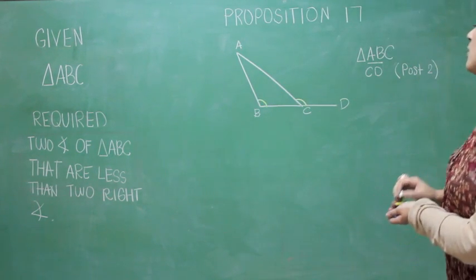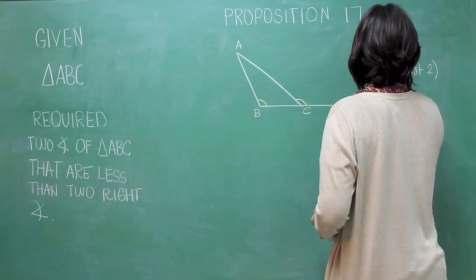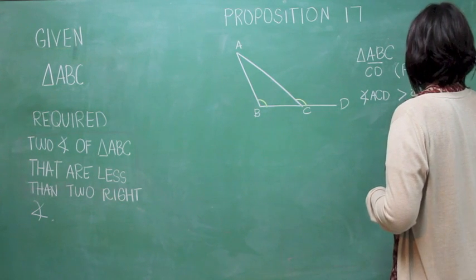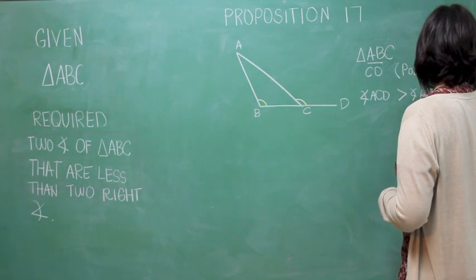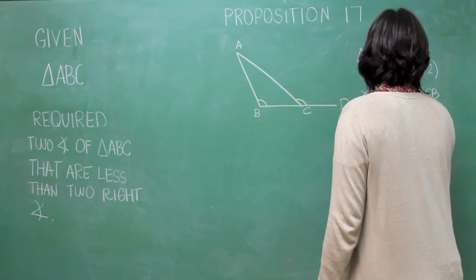So, the angle ACD is greater than our angle ACB because of Proposition 16.